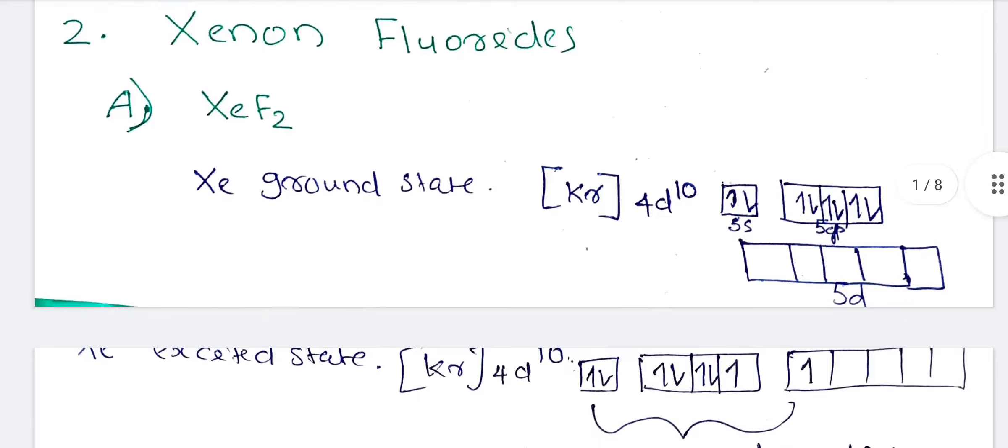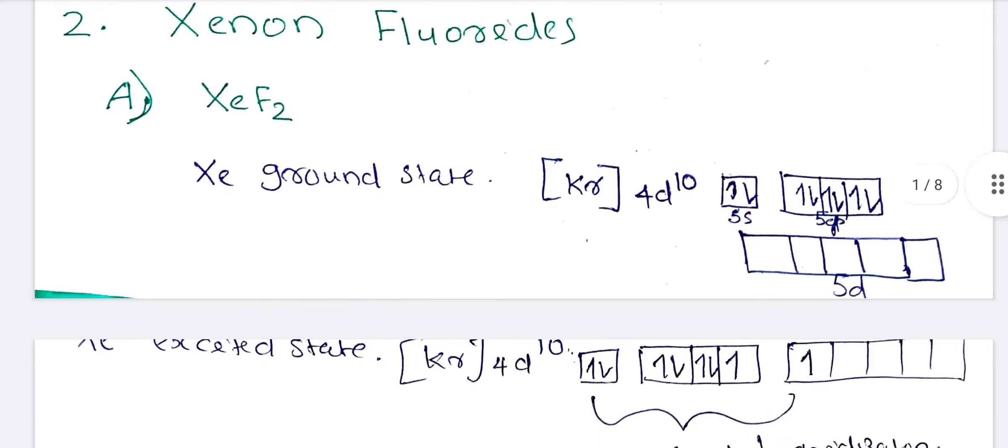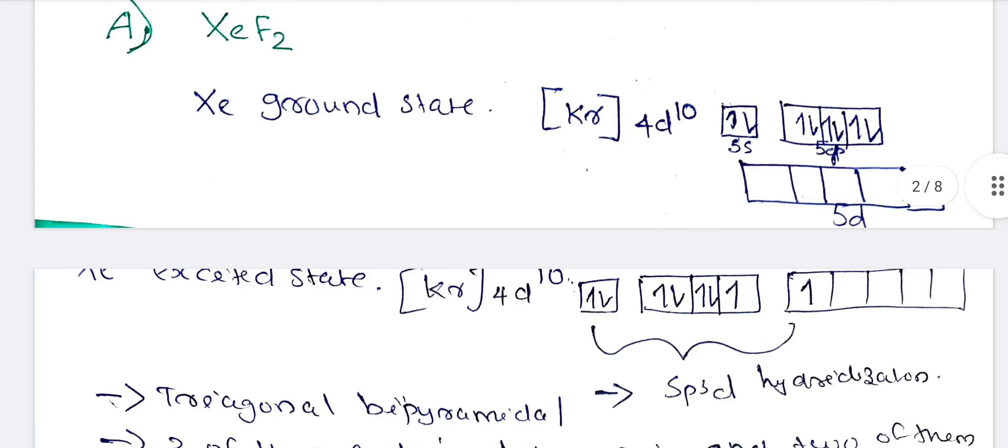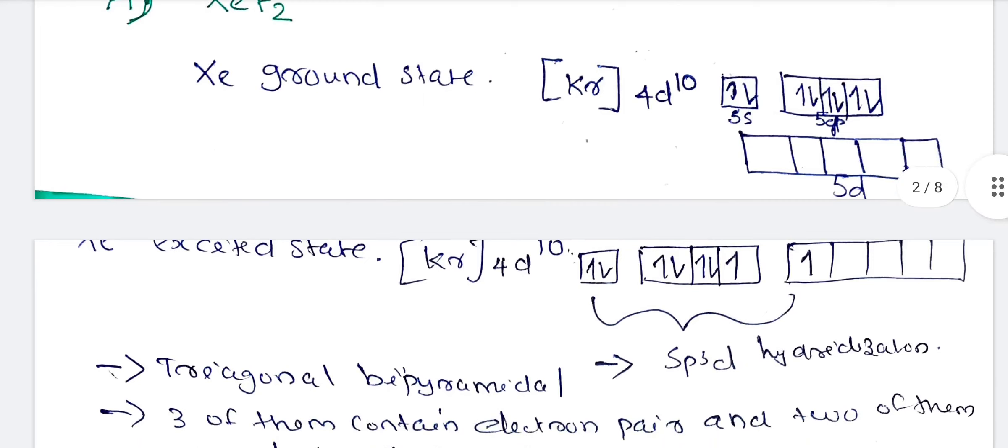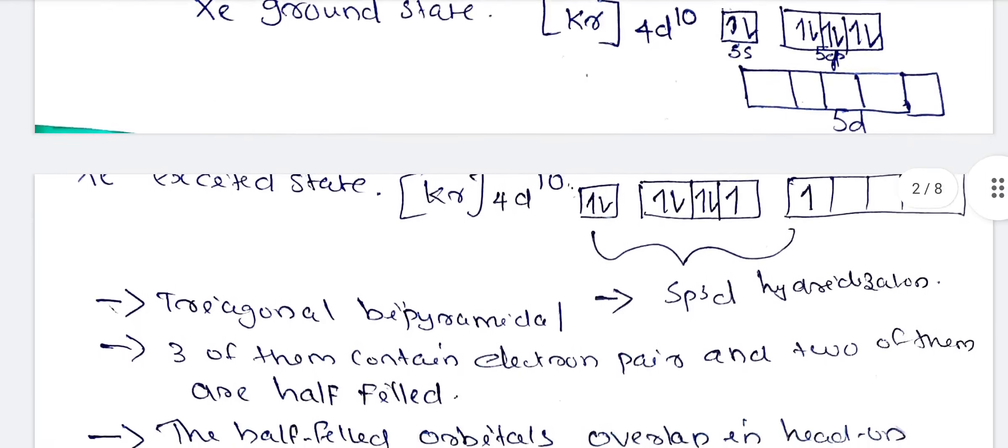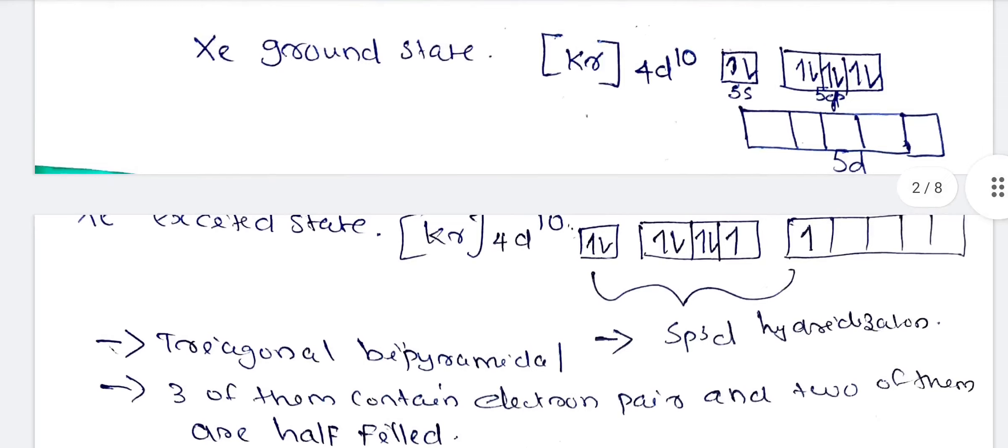First, we will discuss XeF2, Xenon Difluoride. Xenon ground state is [Kr]4d10 5s2 5p6. In the excited state, [Kr]4d10 5s2 5p5 5d1. There are not 6 pairs but 5 pairs in the area.